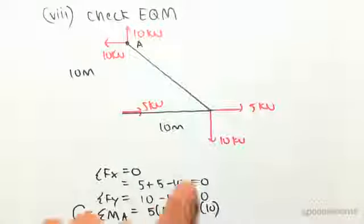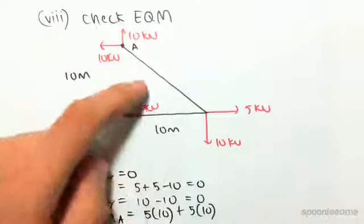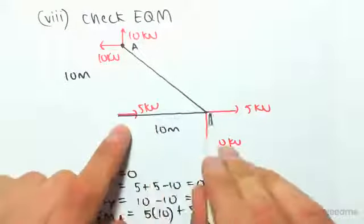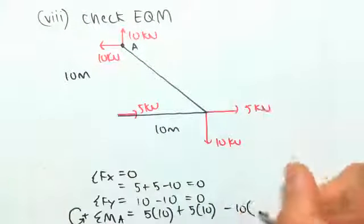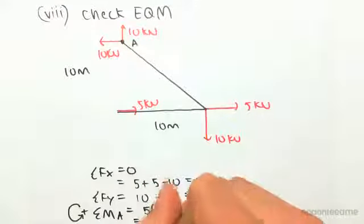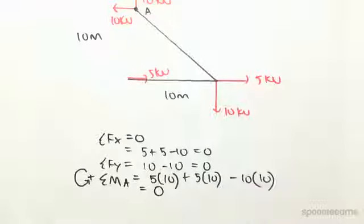And this 10 is going down, and about A it's going clockwise, so it's going to be minus 10. And that's 10 meters - the lever arm there is 10 meters around A, so 10 by 10. So it's 50 plus 50 minus 100, which is zero, so we do have equilibrium force and moment.